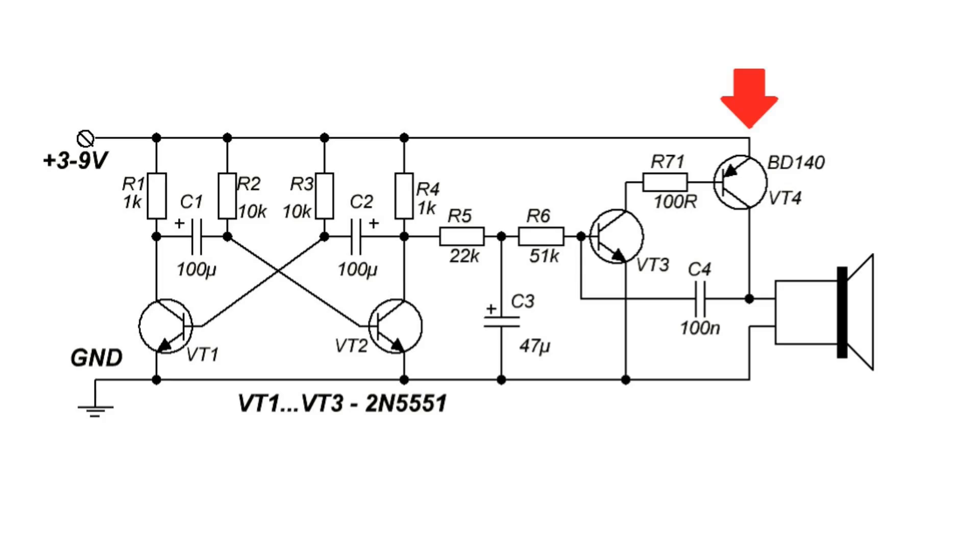The second transistor of the unbalanced multivibrator simultaneously works as a power transistor. As a load for it, there is a loudspeaker in the collector circuit.